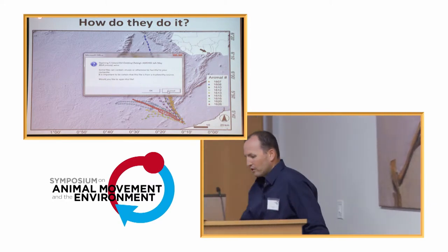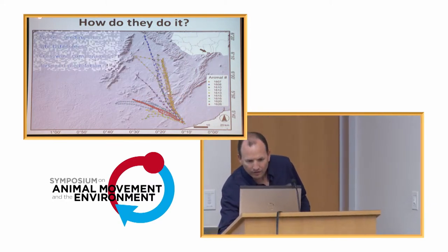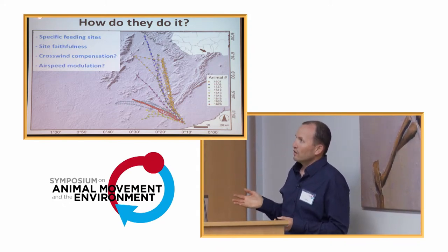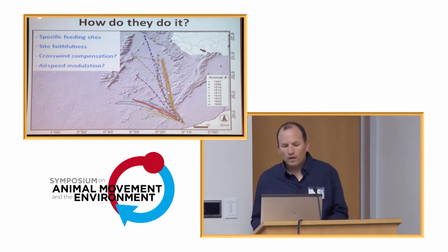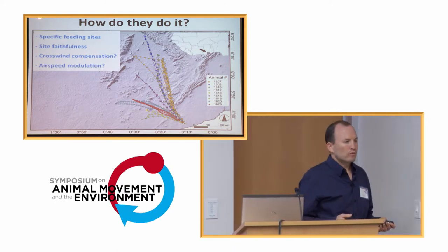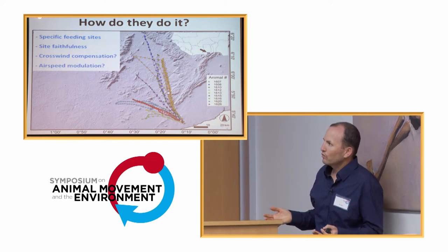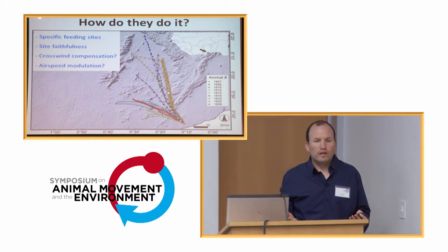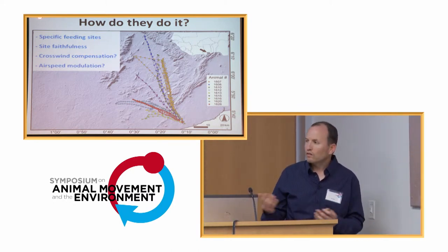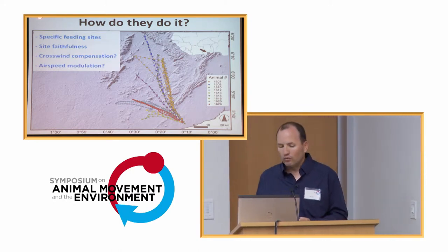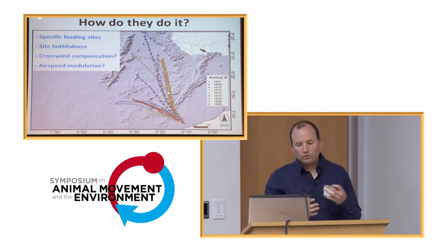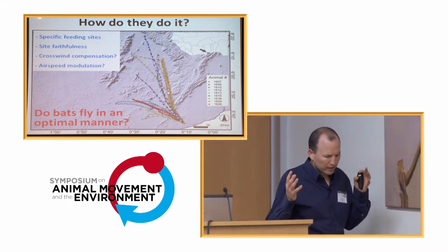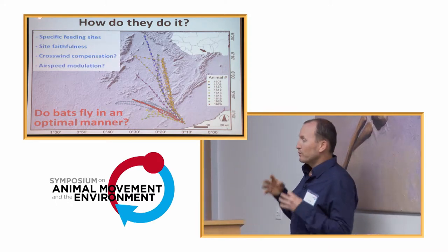So, once again, so we know that they have specific feeding sites, and they had site faithfulness overall. And we wondered what happened with the wind. They are obviously encountering different kinds of winds along the way. We don't know anything about their behavior when they encounter crosswinds that may shift them sideways. And we don't know if they change their own speed in relation to the air. So maybe the bigger question here is, do bats fly in an optimal manner? Whether they are responding optimally to their environment, and this might have some important consequences on their fitness.